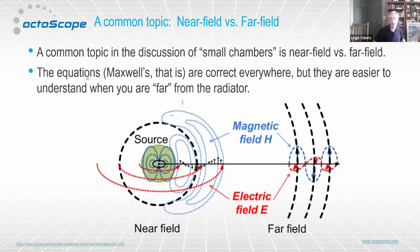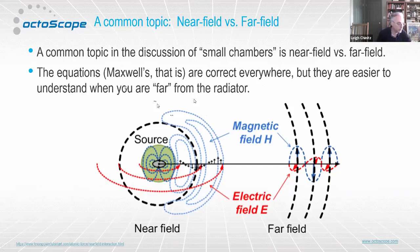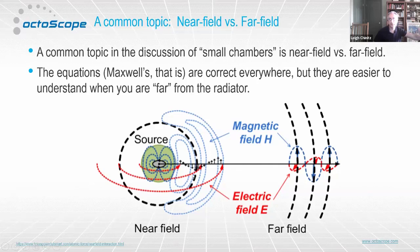Maxwell's equations are correct everywhere and can be solved everywhere in space, but they're a lot easier to understand when you're far away from the radiator. When you're far away, you get those patterns I showed before — electric and magnetic fields at right angles to each other. Nearby the transmitter, the relationship between the electric and magnetic fields is a little more complicated. You have terms in those equations that are really only valid nearby, and the electric and magnetic fields aren't necessarily at right angles to each other — they have a much more complicated shape. That's what people refer to as the near field.